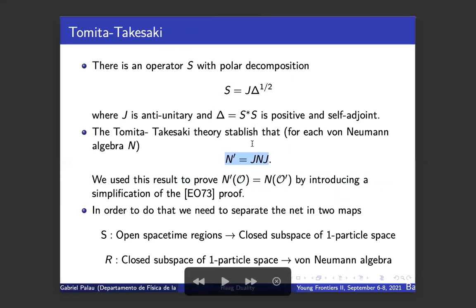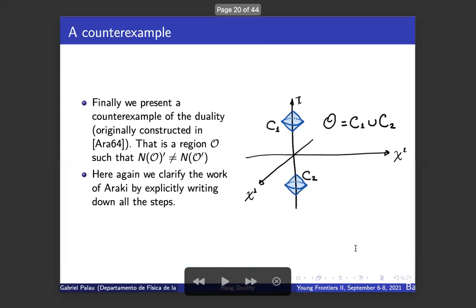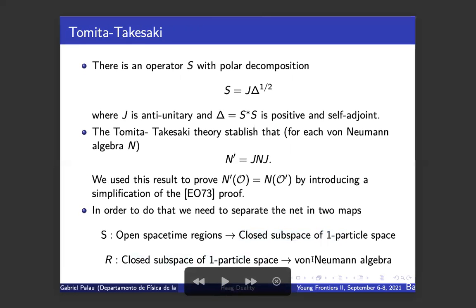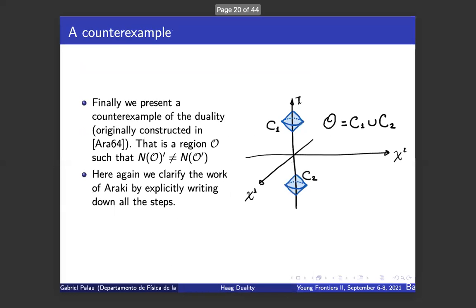When we have an algebra acting on a Hilbert space, we can define an operator S, usually called the modular evolution, and we can apply the polar decomposition to it, obtaining two operators. The most important for us is J, which enables us to calculate the commutant of an algebra by applying this strong result of Tomita-Takesaki theory. The proof was separated in two steps. The first step, usually called the first quantization map, is a map that sends the spacetime region to a subspace of the one-particle space. To prove the duality here, we follow Araki.